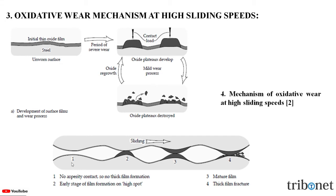The sequence of events associated with the formation and removal of the oxide layers is shown in this figure. Here, we can see that at spot one there is no asperity contact and hence there is no thick film formation. At the second stage, there is formation of the high spot, then the film matures, and then the thick film fractures because of the oxidative wear.